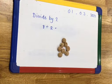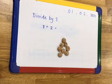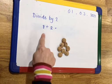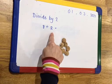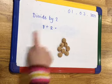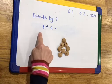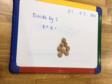Now children, I want you to collect some objects — maybe pasta or cereal or stones, whatever you've got in the house — and I want you to see if you can solve this by using the grouping method. Maybe you want to use the grouping method on a number line and that's absolutely fine. But 8 divided by 2 — see what you can do, children.